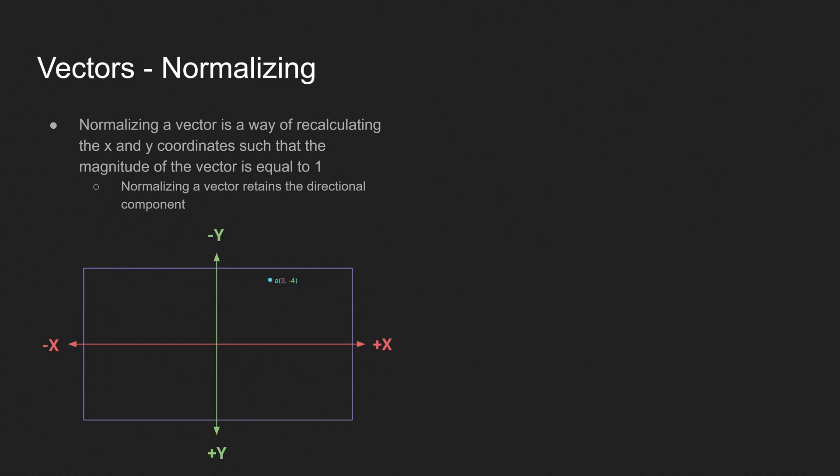So normalizing a vector is a way of recalculating the x and y coordinates such that the magnitude of the vector is always equal to 1. While it retains the directional component. So to calculate a normalized vector, it's pretty simple again. We just take the x value divided by the magnitude, and that's equal to our normalized x value. And the same is true of y. If we want to get the normalized y value, we just divide the y value by the magnitude of our vector. And the normalized vector is simply those two values in place of the old x and y values. So the normalized vector a is normalized x, normalized y. Simple. And if we plug in the numbers from our vector, and we know the magnitude is 5 from the last slide, the equation evaluates to 0.6 units on the x and negative 0.8 units on the y. And the length of this vector is 1.